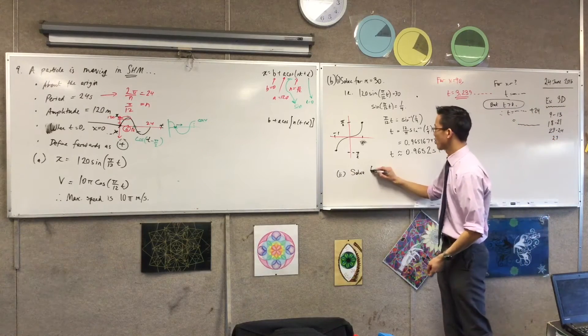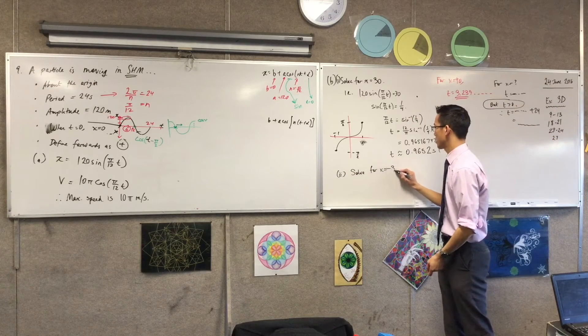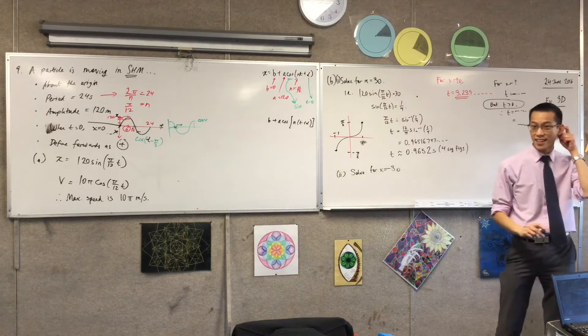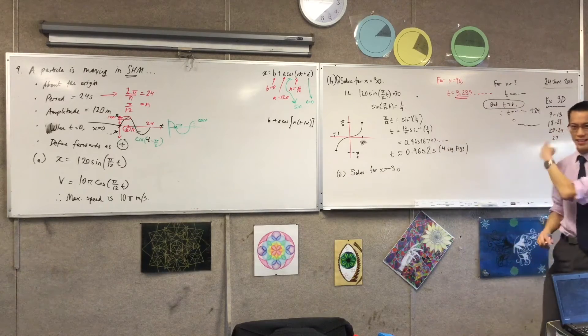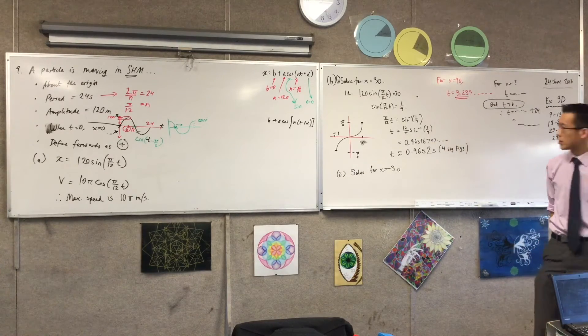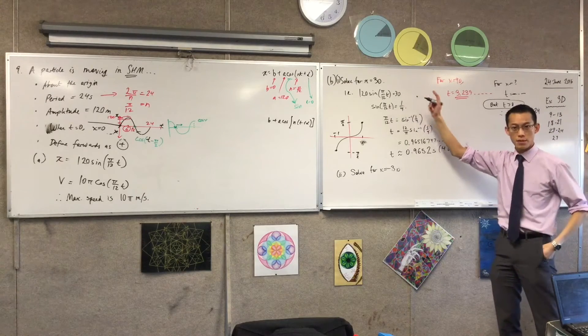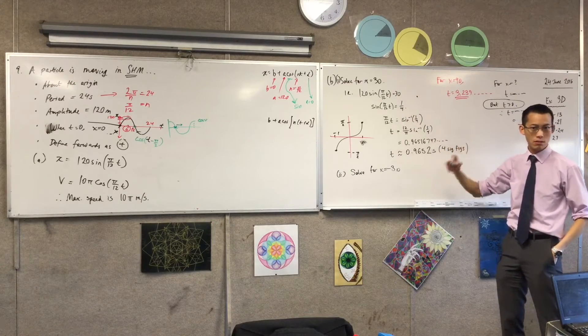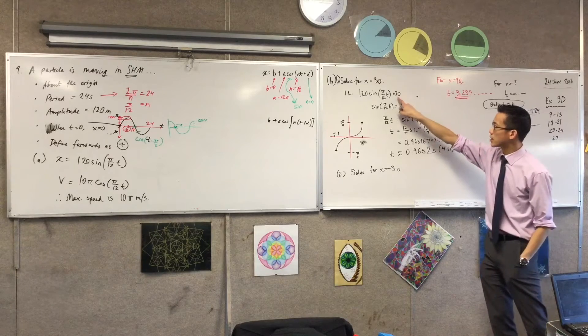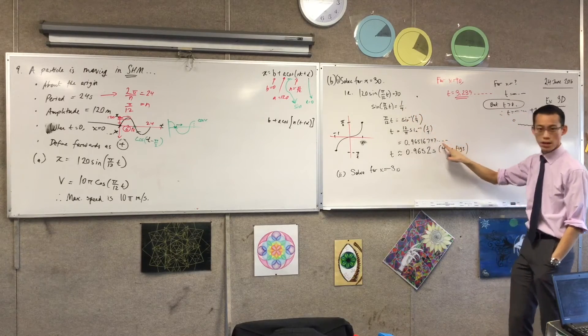Let's solve for x equals negative 30. The answers aren't really weird. Let's have a look. Maybe we will encounter this problem when we have a go at this. Obviously everything is going to be the same except for sine of negative 30, which means that will be negative a quarter, negative a quarter, etc.